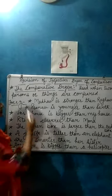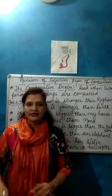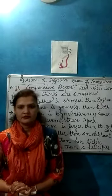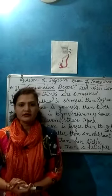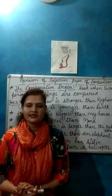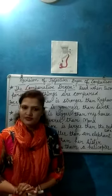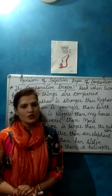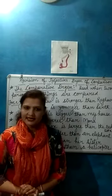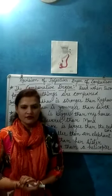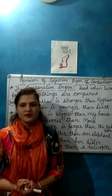Now, come to the next form of the degree of comparison: the comparative degree. The comparative degree is used when two persons and things are compared. It refers to a greater degree of an adjective as compared to the positive degree. An adjective is said to be in the comparative degree when it is used to compare two nouns or pronouns. It expresses that a quality is present to a greater or lesser degree in one of the two persons or things being compared.